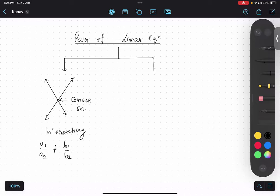Second condition, parallel. And what is the algebraic condition of this? A1 upon A2 is equal to B1 upon B2 is not equal to C1 upon C2. Good job.